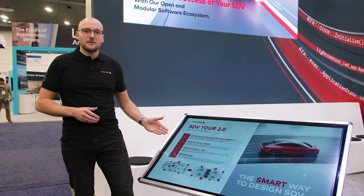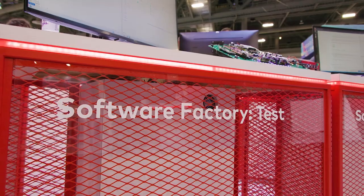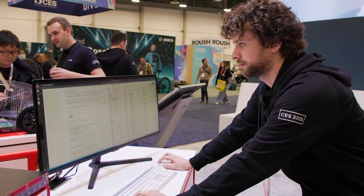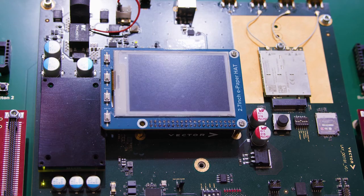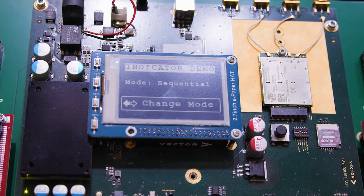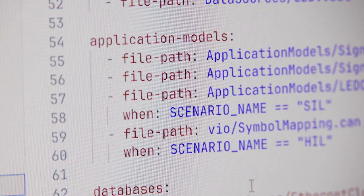At the third station, we will see the testing part, where we test the freshly built application and make it ready for the deployment in the next step, which will happen in the big data loop.